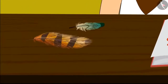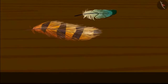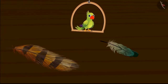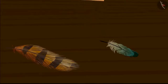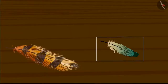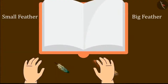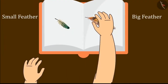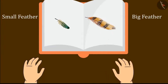Now it is the turn of the bird's feathers. Here are the two feathers of the bird. Can you tell which one of these feathers is shorter? You thought right, kids — this is a small feather. I will paste the small feather here, and now I will paste this big feather here.